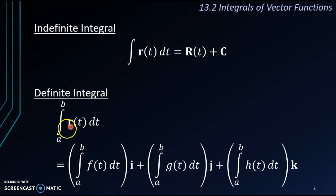But for a definite integral, you can see from here we have lower limit a and upper limit b. So if we are doing a definite integral, then what we need to do is just to integrate each of the components. You can see here the i, j, k.